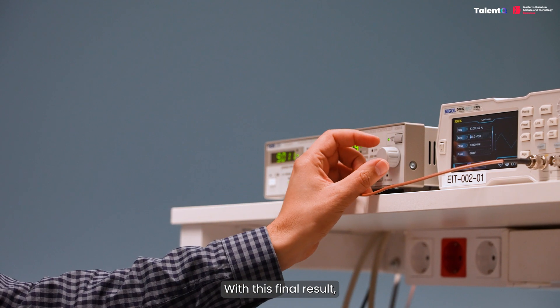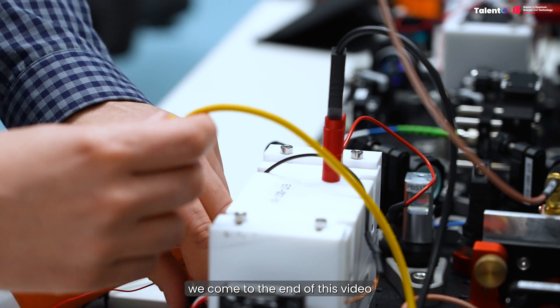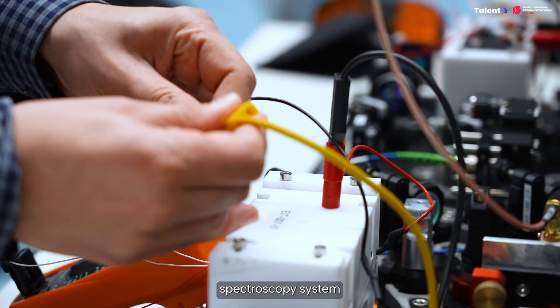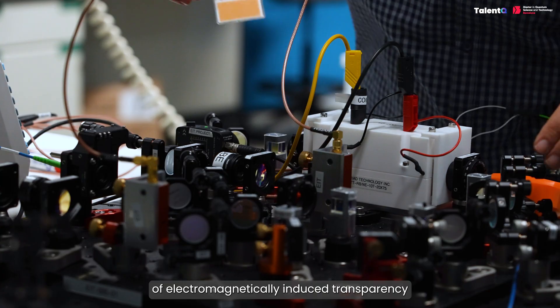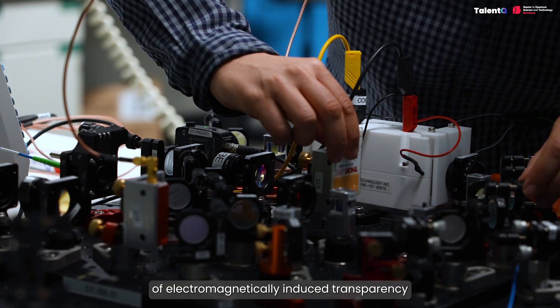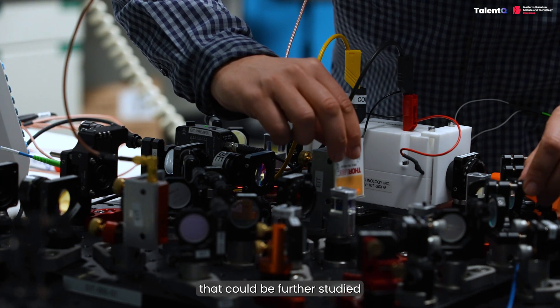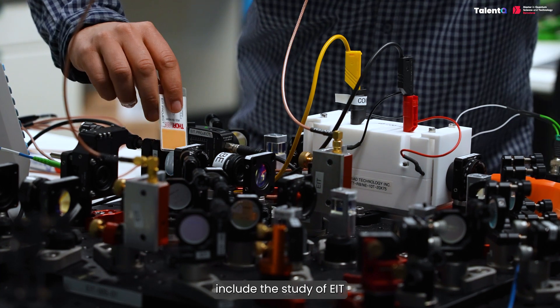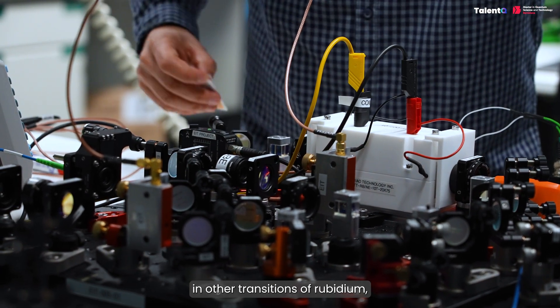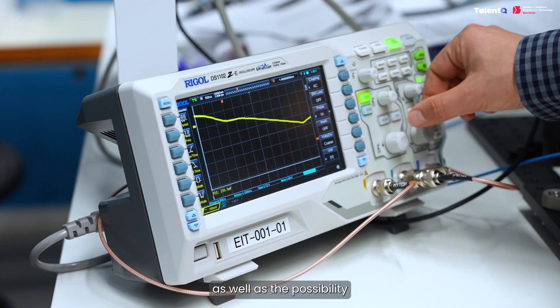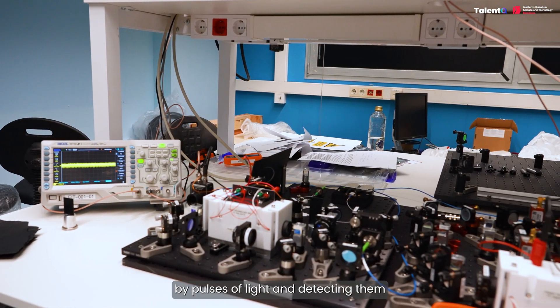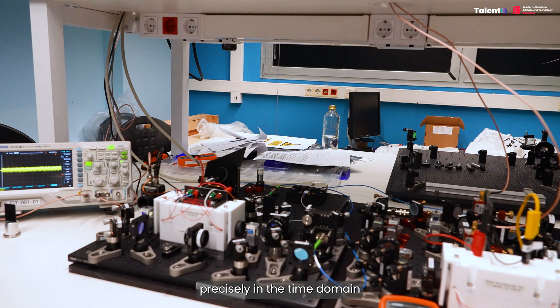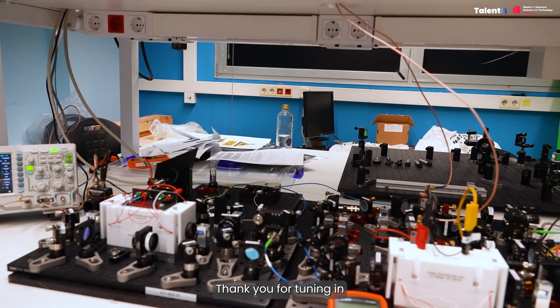With this final result, we come to the end of this video. We have quickly given an overview of how a rubidium spectroscopy system can be used to study the phenomenon of electromagnetically induced transparency. Interesting directions that could be further studied in this system include the study of EIT in other transitions of rubidium, as well as the possibility of realizing slow light in this system by pulses of light and detecting them precisely in the time domain. Thank you for tuning in.